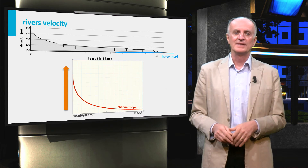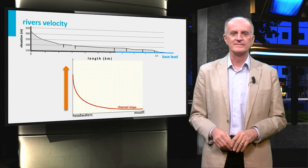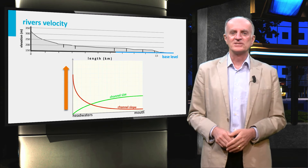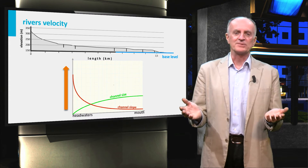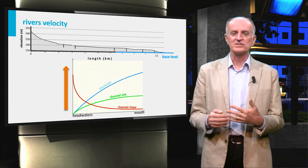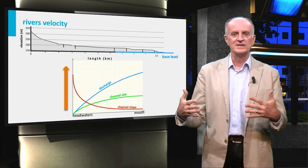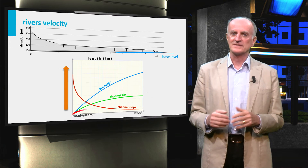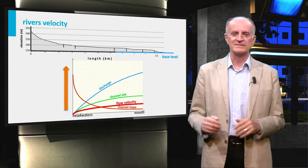In general, the steeper the slope, the higher the flow velocity. From the source to the sea, valleys generally become wider, which implies that the speed decreases. In the same direction, however, river discharge increases because affluent rivers join the main river. As long as the section remains constant, this results in a slight increase in velocity.